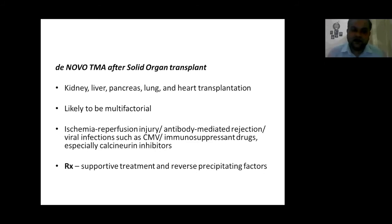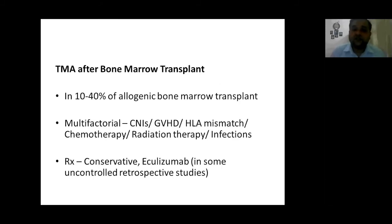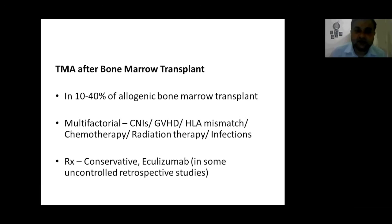Solid organ transplant — kidney, liver, pancreas, lung, and heart — can also cause TMA. This is mostly multifactorial: ischemia-reperfusion injury, antibody-mediated rejection, viral infection such as CMV due to immunosuppression, or the immunosuppressive drug itself, especially calcineurin inhibitors. Treatment is to revert precipitating factors and give supportive treatment. After bone marrow transplant, TMA is seen in 10 to 40% of allogeneic transplants. Again multifactorial — calcineurin inhibitors, graft-versus-host disease, HLA mismatch, chemotherapy, radiation therapy, or infections. Treatment is conservative, and eculizumab has shown good results in uncontrolled retrospective studies, though RCTs are yet to be conducted.